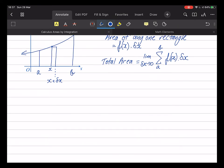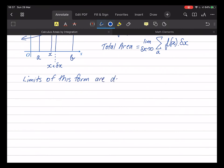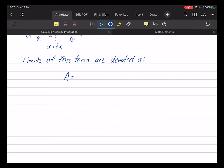Now, limits of this form are denoted as that thing there. And to say that, we say this is the definite integral of the function, so this is of f of x, from a up to b, from a to b.